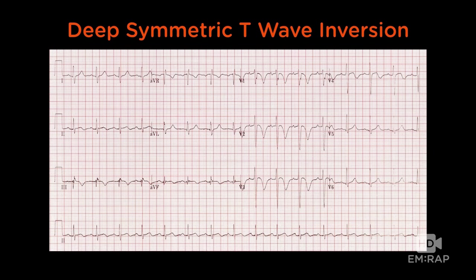In patients that have deep symmetric T-wave inversion through the precordium — V1, V2, V3, V4 principally — those patients have bigger PEs. It's not only consistent with PE, but if it is a PE, it tends to be the bigger ones that have that sign. So that's actually pretty helpful.